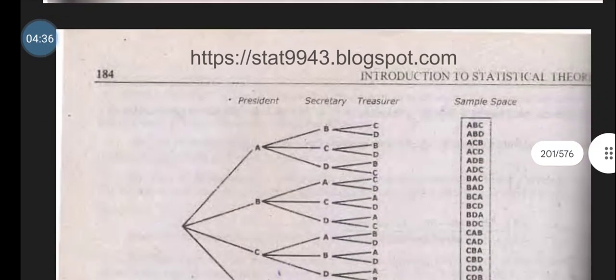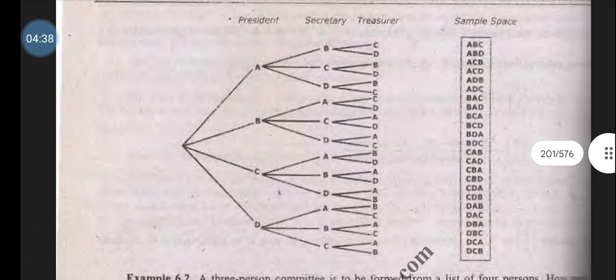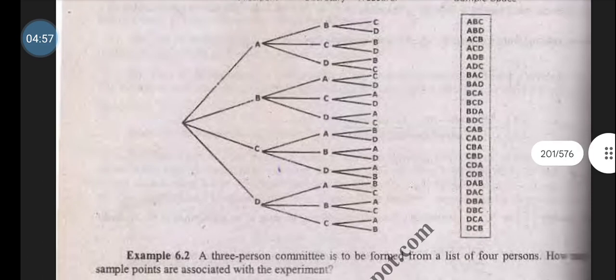The possible outcomes with members A, B, C, D are: President can be A, B, C, or D; Secretary can be any of the remaining three; and Treasurer can be any of the remaining two. All combinations like ABC, ABD, ACD, BCD for different positions are possible.